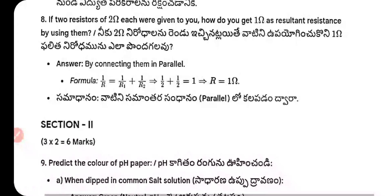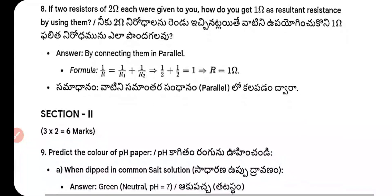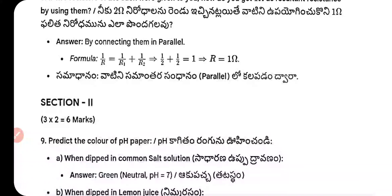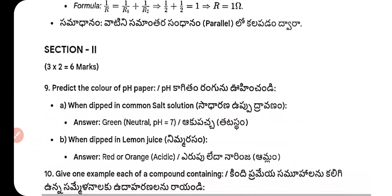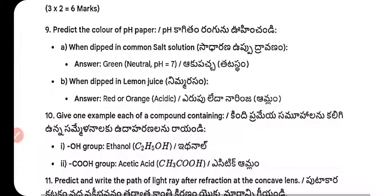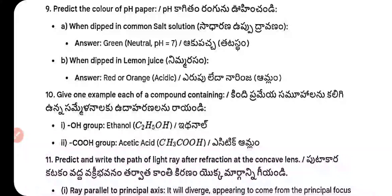Question 8 — Two resistors of 2 ohms each in parallel: formula 1/R = 1/R₁ + 1/R₂. Putting values: 1/2 + 1/2 = 2/2 = 1, so R = 1 ohm.